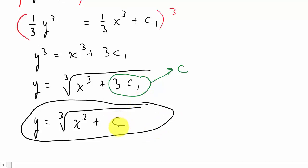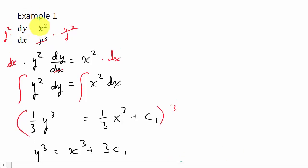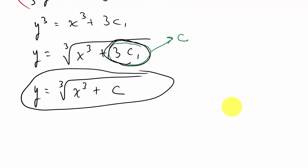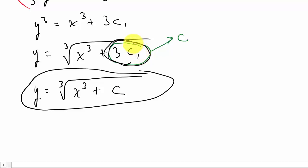I don't need to manipulate the constant term anymore — I've solved for y, and c is just 3c1. We don't know what c is, but this cube root of x cubed plus c satisfies the original differential equation. When solving using separation of variables, the integration should be straightforward since you've learned your integration techniques. The main thing to watch out for is correctly handling and rewriting that arbitrary constant.